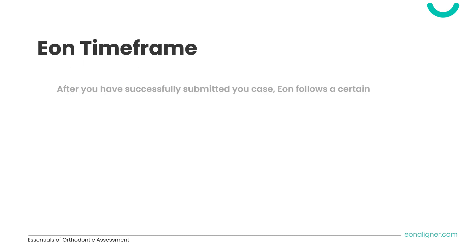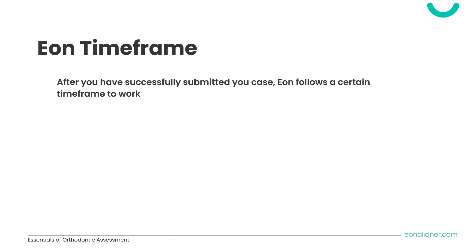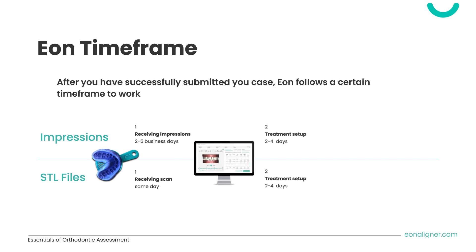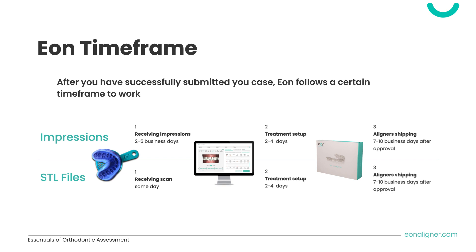Lastly, we're going to discuss the EON time frame. Following the submission of the case, EON follows a certain time frame to complete the shipping of the aligners. If you are using conventional silicone records, impressions will take 2–5 business days to be picked up and shipped to EON. Following that, the treatment setup will be generated within 2–4 days. When you approve the treatment setup, aligners will take 7–10 business days to be delivered. The only difference when using an intraoral scanner is that the treatment setup will start generating sooner.